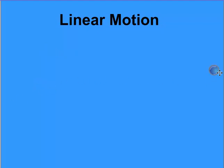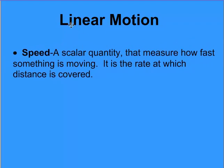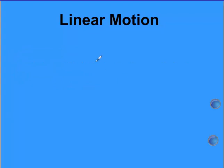The next thing about linear motion is speed. And this is what I just covered, and I just want to give you the definition. It is a scalar quantity, and it does measure how fast something is moving, and it is the rate at which distance is covered.